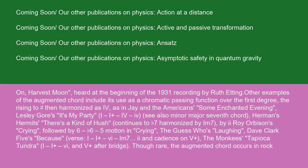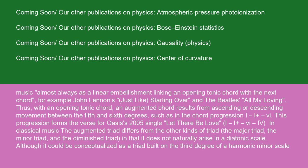See also minor-major seventh chord. Herman's Hermits' There's a Kind of Hush continues to VII harmonized by M7, then II. Roy Orbison's Crying, followed by VI-VI, V motion in Crying. The Guess Who's Laughing. Dave Clark Five's Because (verse): I, I+, VI, M7, II, cadence on V+. The Monkees' Tapioca Tundra: I, I+, VI in V+ after bridge. Though rare, the augmented chord occurs in rock music almost always as a linear embellishment linking an opening tonic chord with the next chord — for example, John Lennon's Just Like Starting Over and the Beatles' All My Loving. Thus, with an opening tonic chord, an augmented chord results from ascending or descending movement between the fifth and sixth degrees, such as in the chord progression I, I+, VI. This progression forms the verse for Oasis's 2005 single Let There Be Love: I, I+, VI.